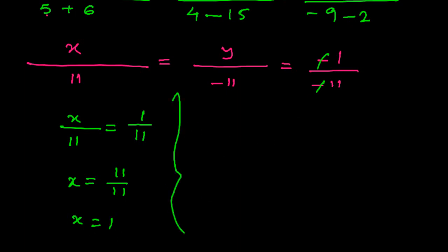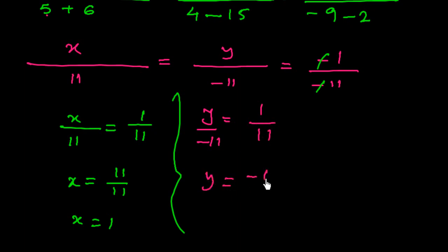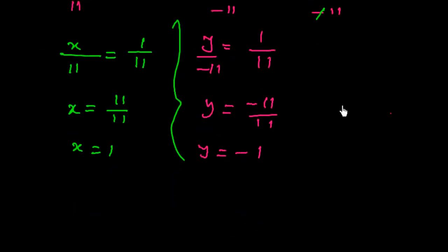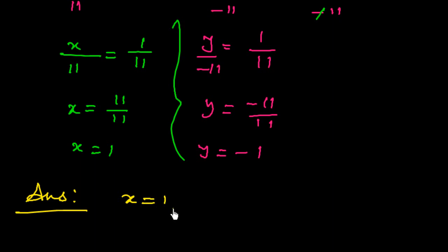For y: y over minus 11 is equal to 1 over 11. So y is equal to minus 11 over 11, therefore y is equal to minus 1. So we have got the answer: x is equal to 1 and y is equal to minus 1.